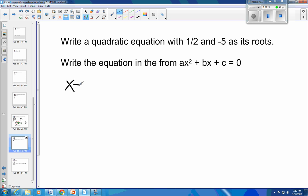I take the x and set it equal to 1 half. I set the x equal to negative 5. Then I'm going to subtract 1 half from both sides. And you get x minus 1 half is equal to 0. And you get, add 5 to both sides.